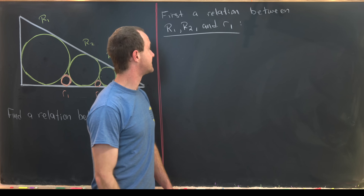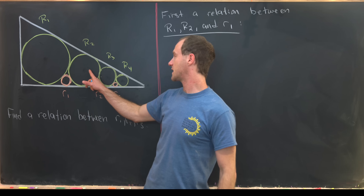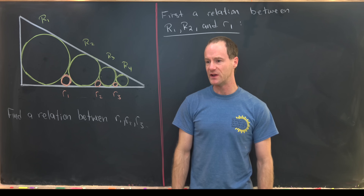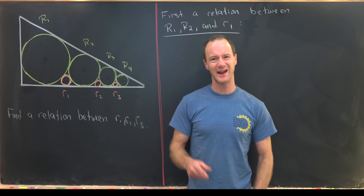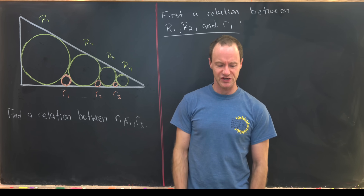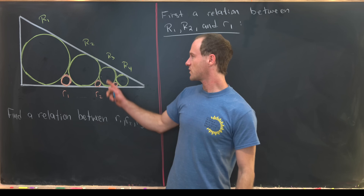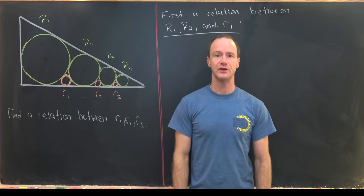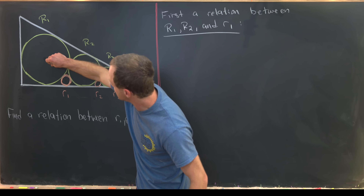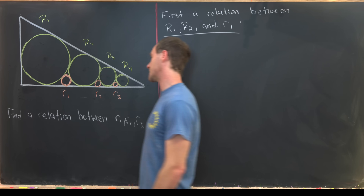First we're going to find a relationship between capital R1, capital R2, and little r1. I made a video on this before and several people have made videos on this problem, so we'll maybe just sketch it really quickly. What we want to do is create a couple of right triangles inside of this situation having to do with these three circles.